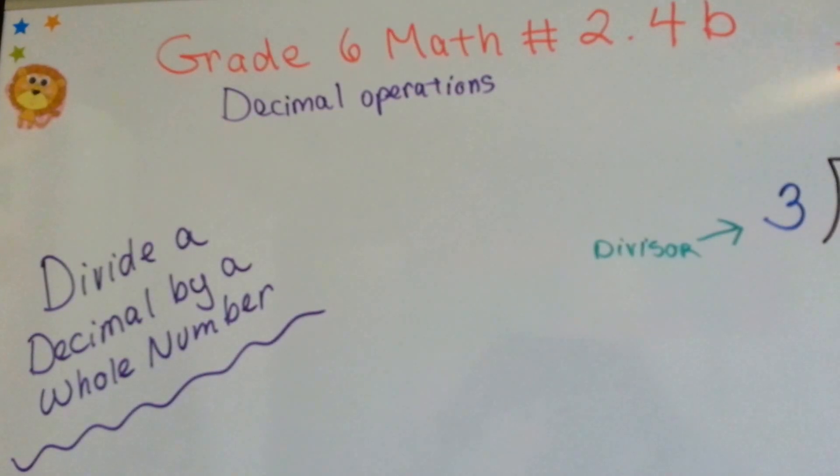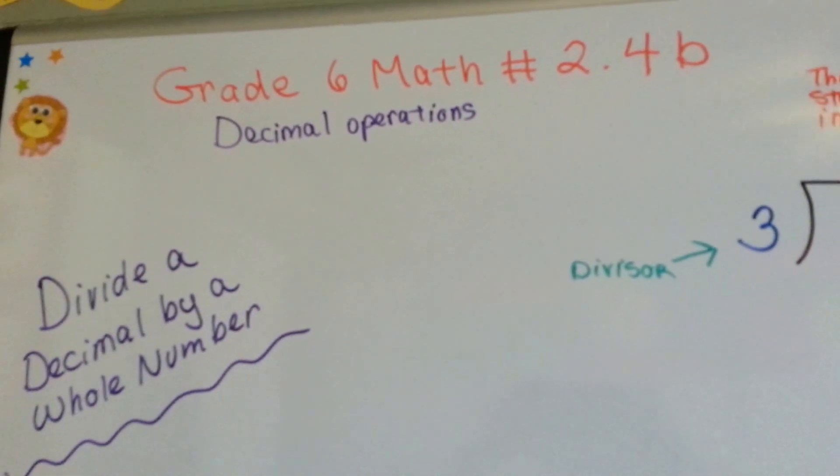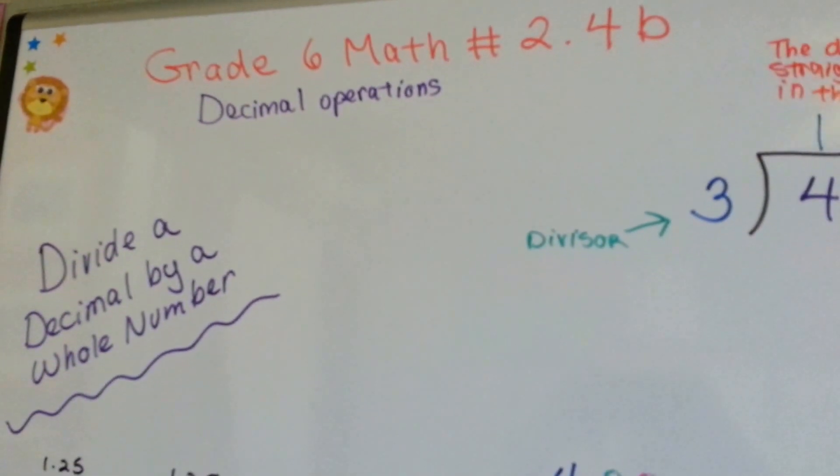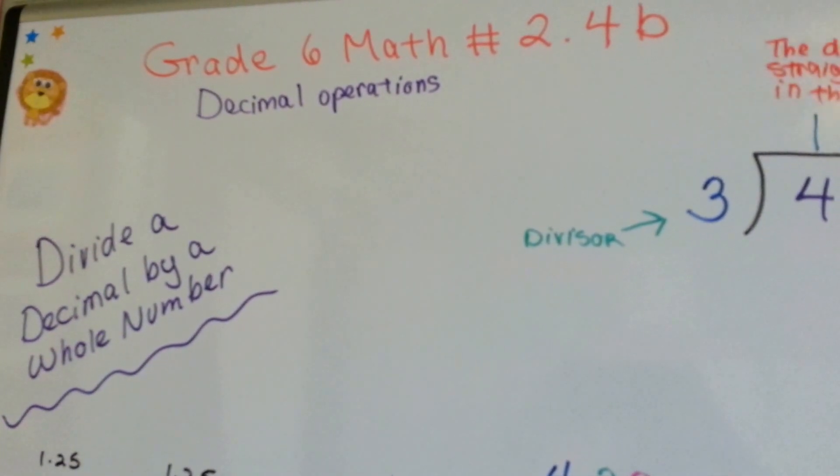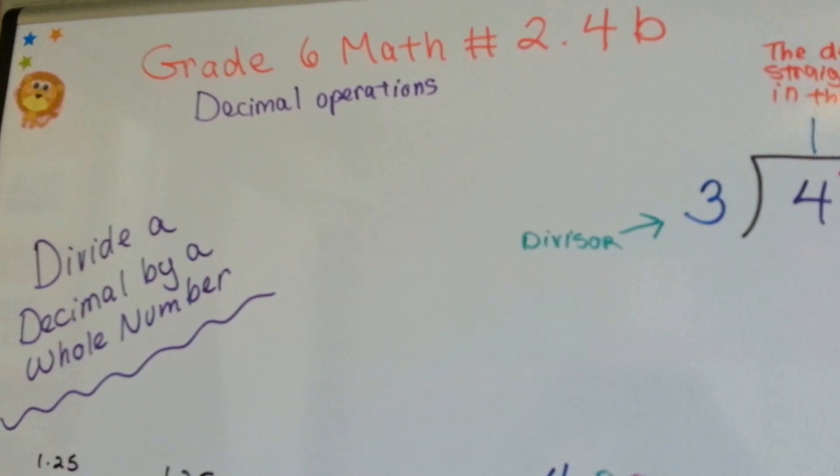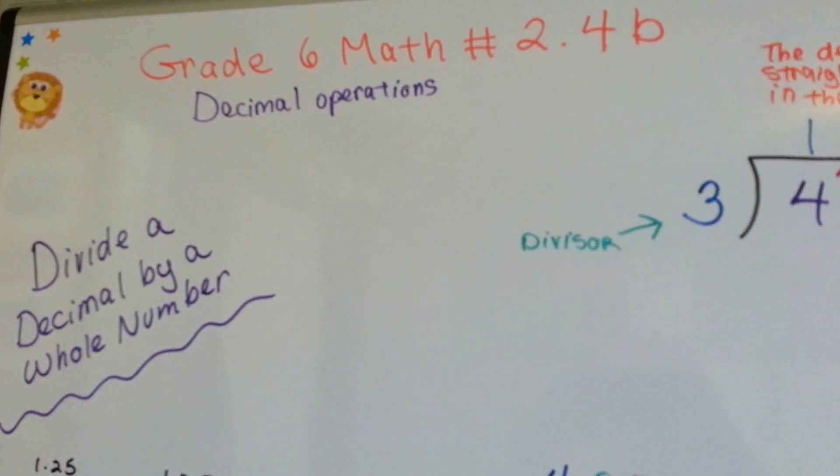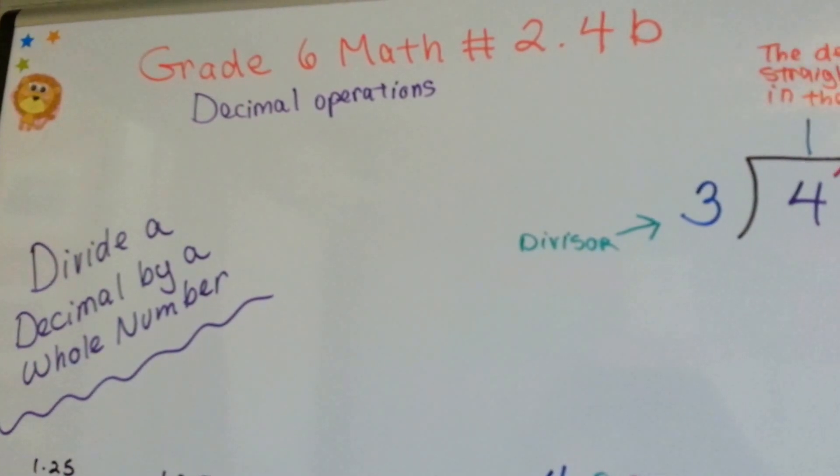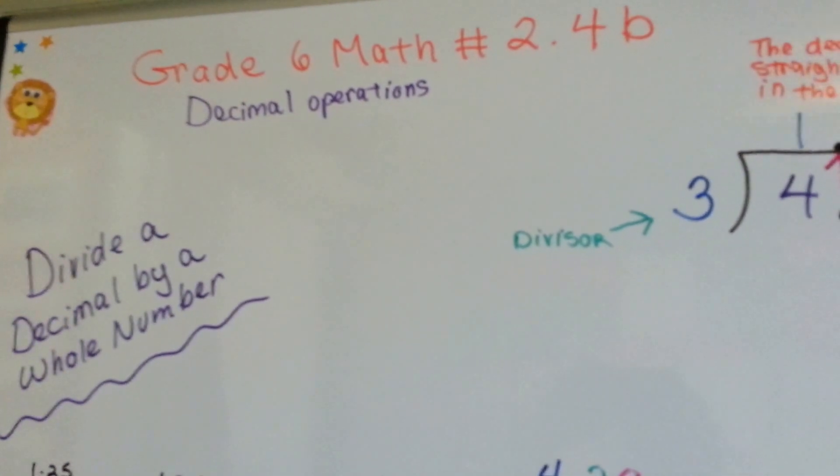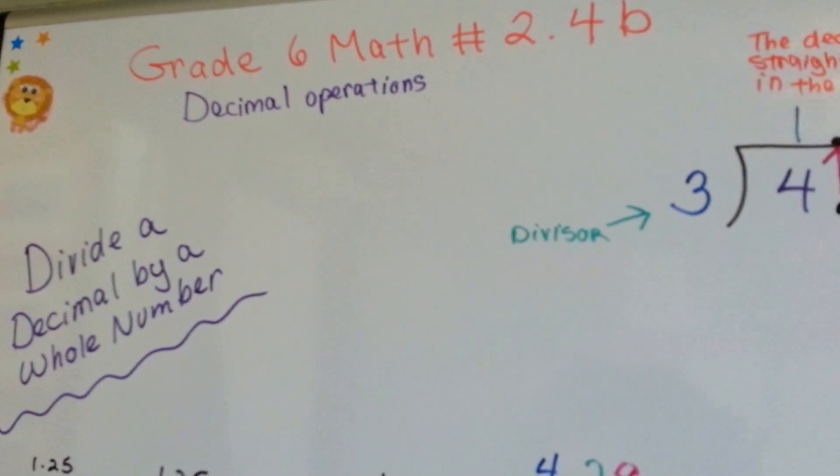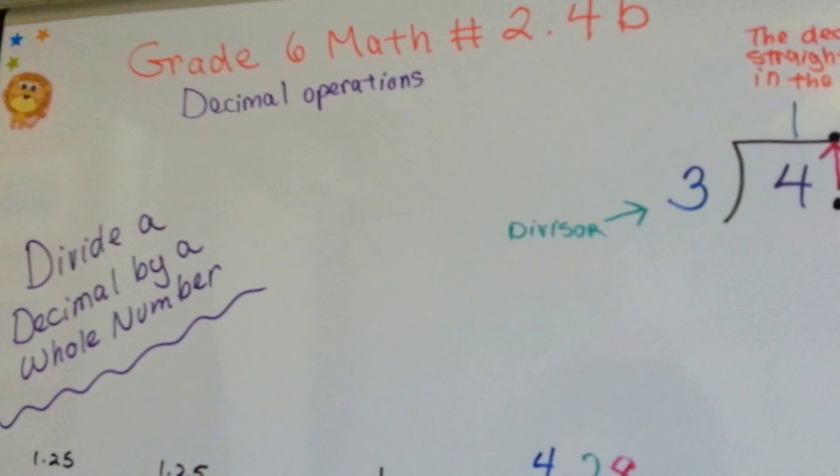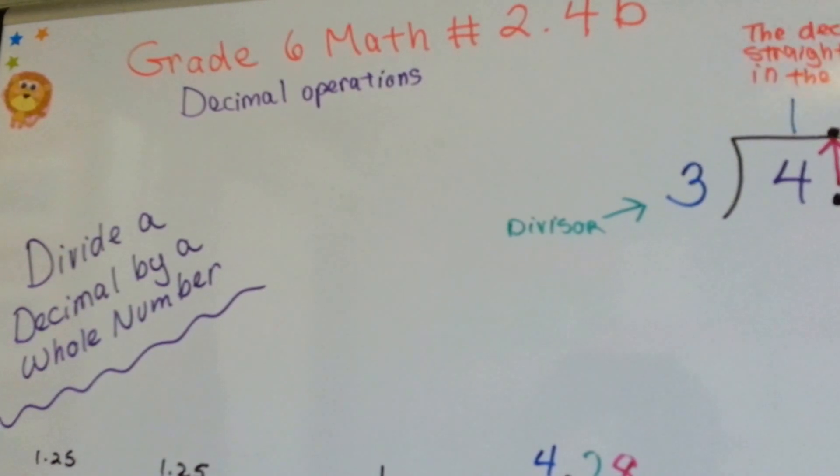Grade 6 math number 2.4b. Divide a decimal by a whole number. The previous video, 2.4a, is a video showing all the decimal operations of dividing by a whole number, dividing by a decimal, dividing a decimal by a whole number, dividing a decimal by a decimal, and it's all on one board so that you can see all at once what's going on. So if you're interested, you might want to go back and check out 2.4a.